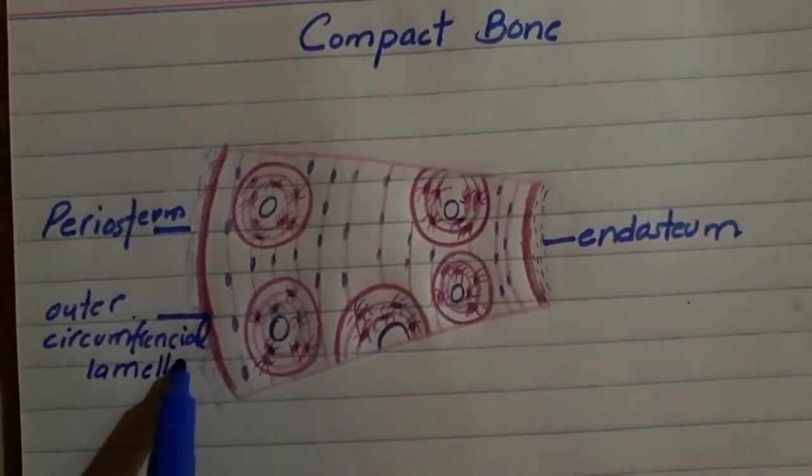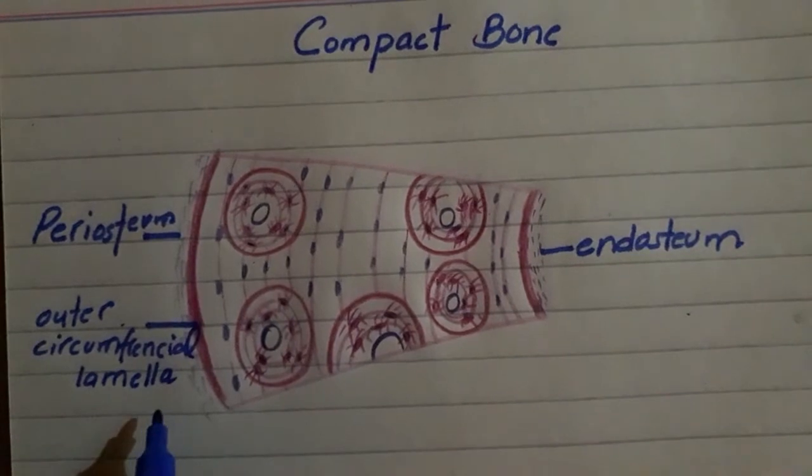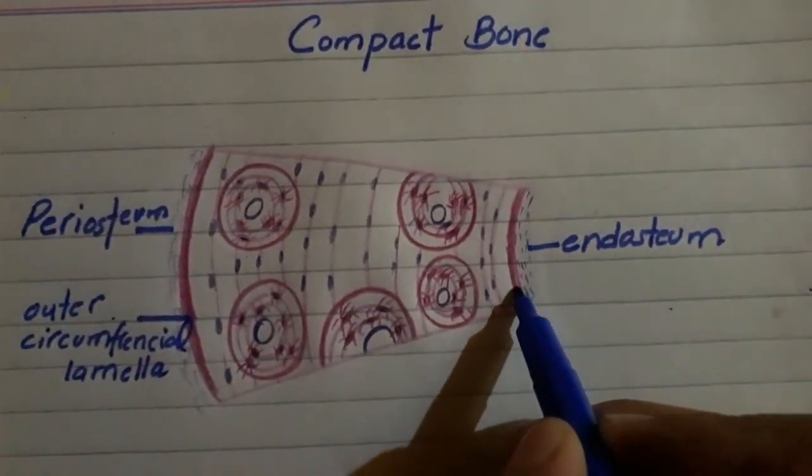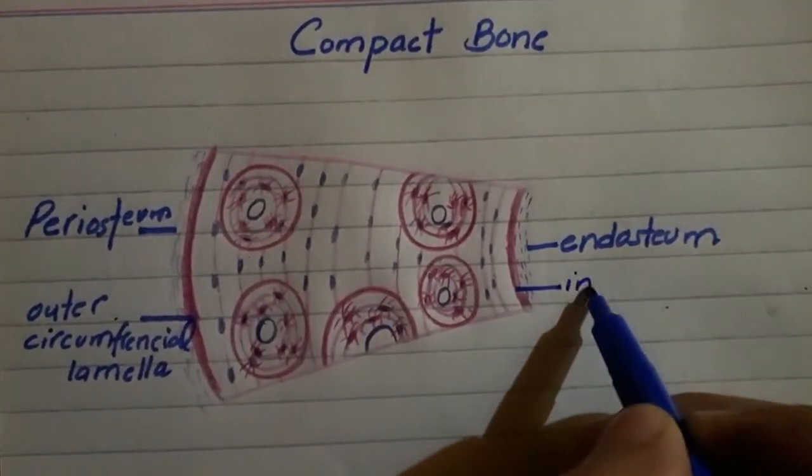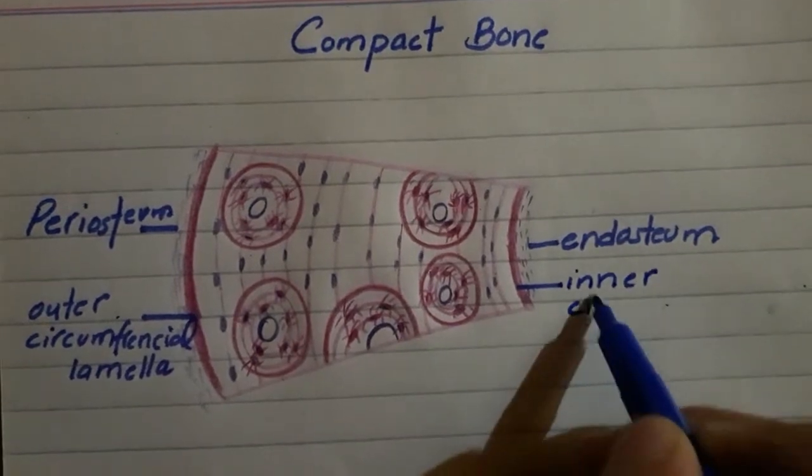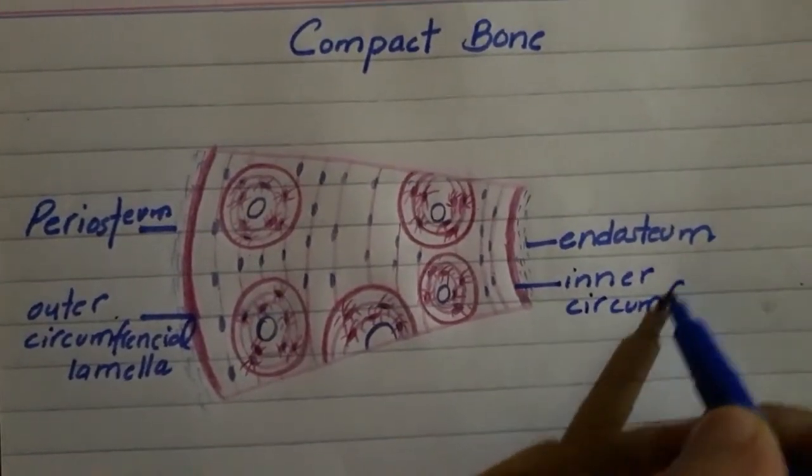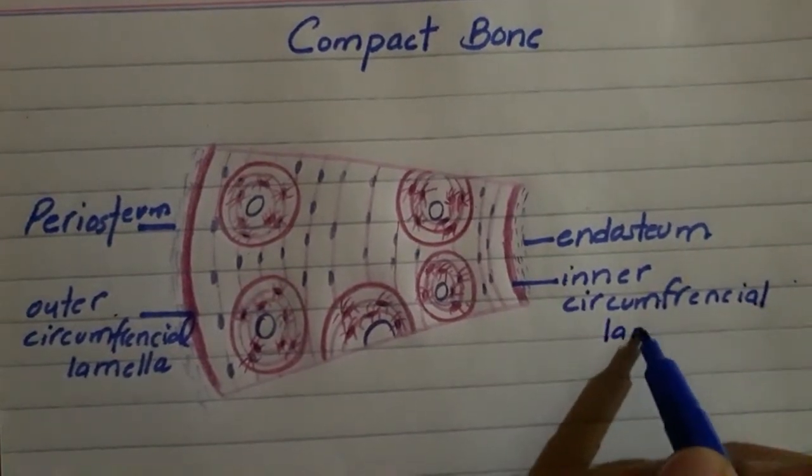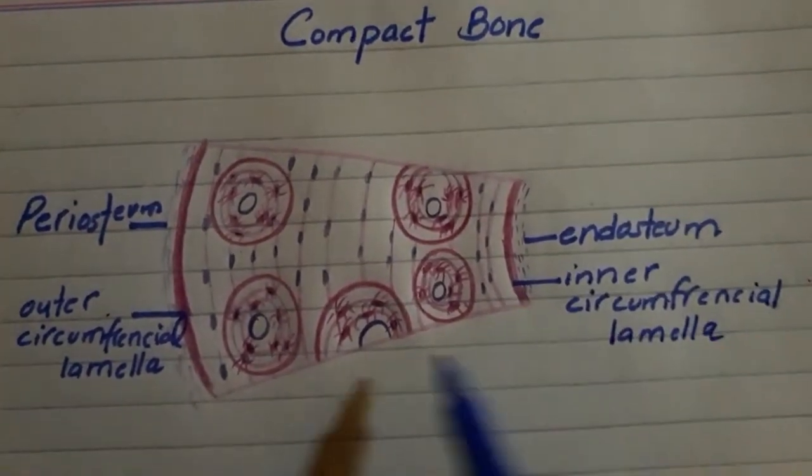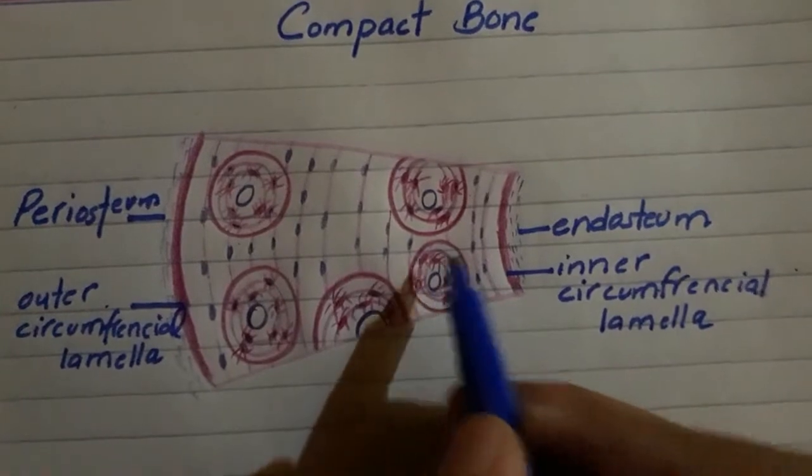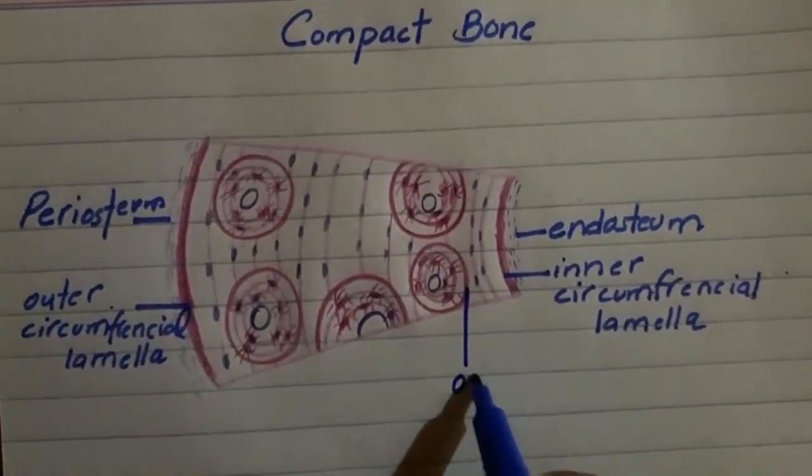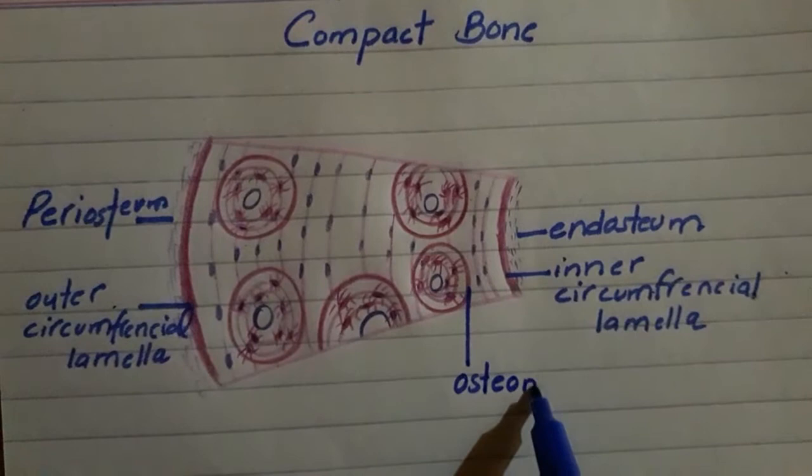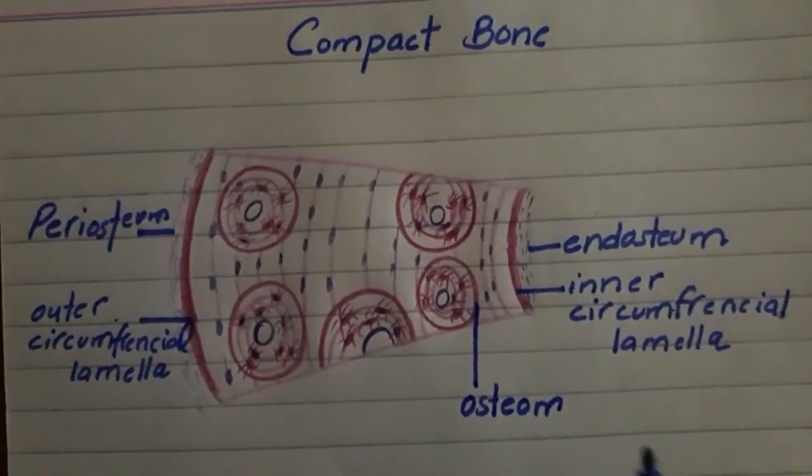Outer circumferential lamella, this is outer circumferential lamella. Now this is the whole structure. We call this one osteone. Osteone diagram can be made.